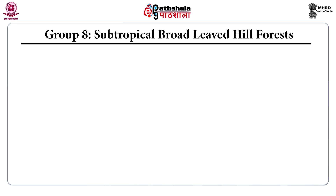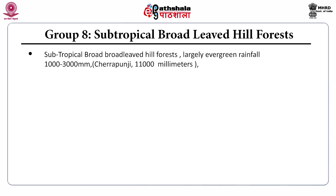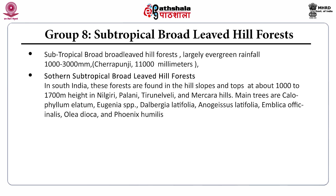Group 8, the subtropical broad-leaved hill forests, are largely evergreen and occur in moderately high rainfall areas of 1000 to 3000 mm. In Cherrapunji, Meghalaya, northeast India, rainfall is very high at 11,000 mm per year. The southern subtropical broad-leaved hill forests are found on hill slopes and tops at about 1000 to 1700 meters in the Nilgiri, Palani, and Markara hills. Main trees are Calophyllum, Eugenia, Dalbergia latifolia, Anogeissus latifolia, Emblica officinalis, Olea dioica, and Phoenix humilis.